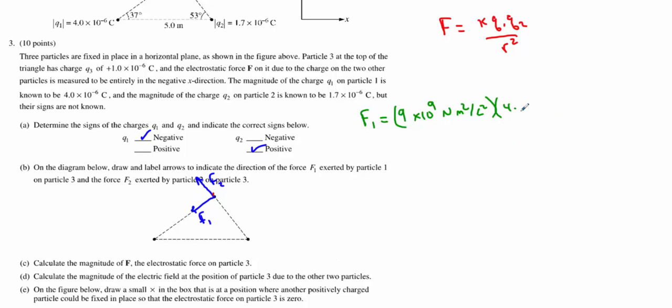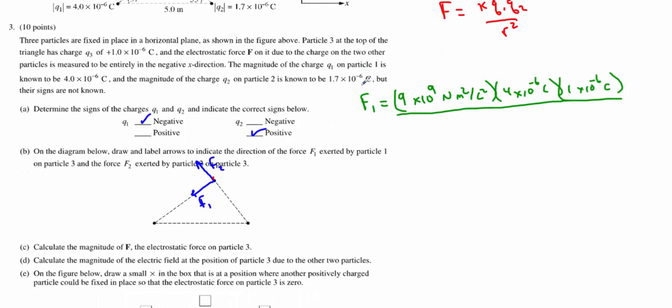So 4 by 10 to the negative 6 coulombs, times the charge of particle 3, which is the 1 by 10 to the negative 6 coulombs. And that's going to be divided by the distance between them, and that geometry was given as 4 meters. We've got to square that term. Keep track of your parentheses, your calculator work, etc., and you're going to get a value of 2.25 by 10 to the negative 3 newtons.